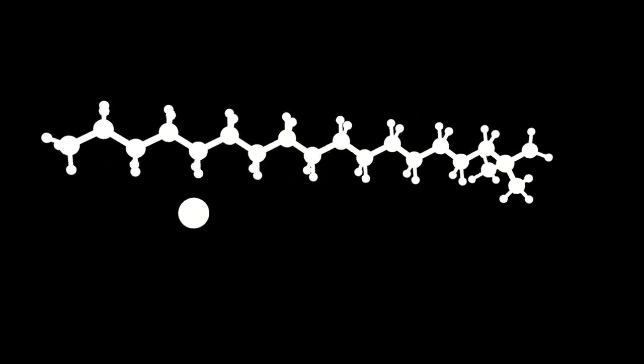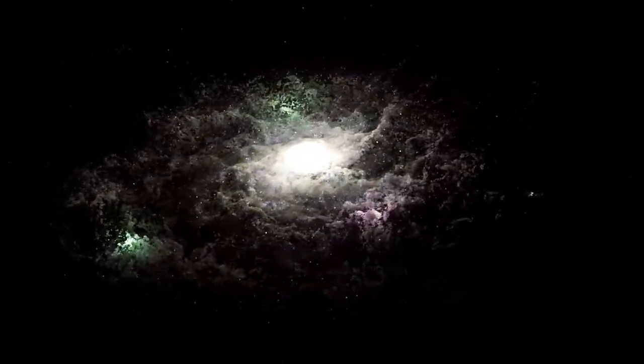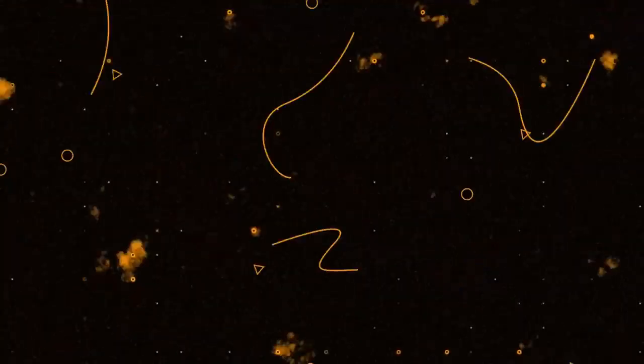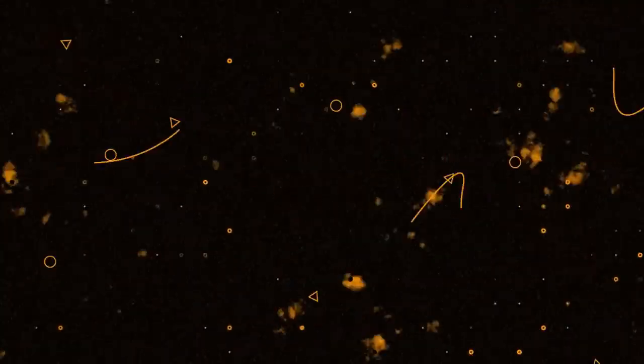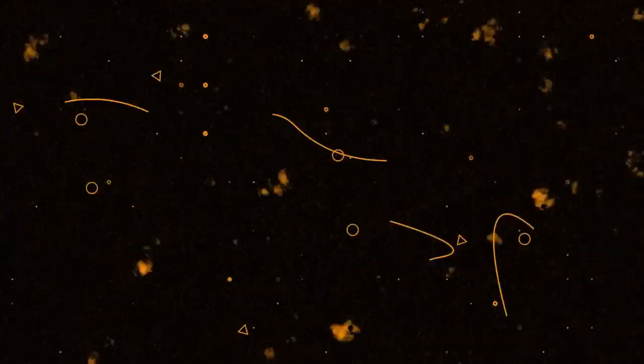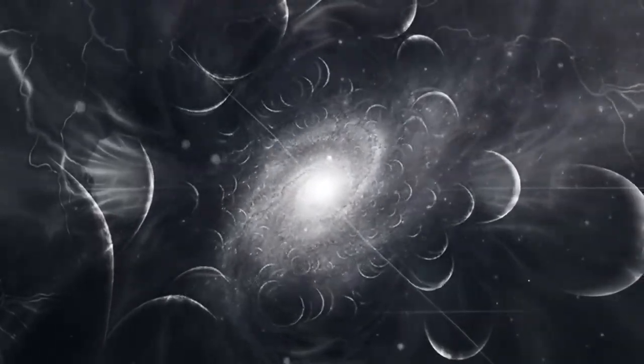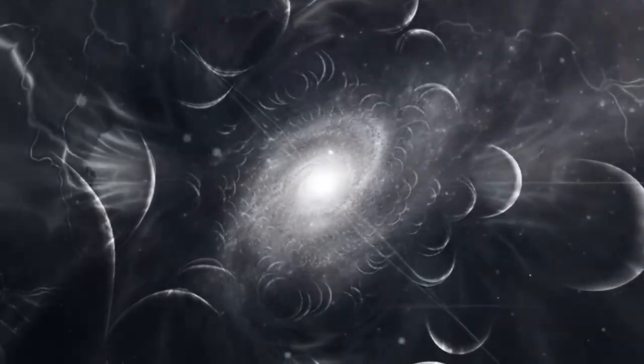Another game-changing revelation came not from what black holes emit, but from what may invisibly surround them. In a pioneering study by the Education University of Hong Kong, astronomers discovered the first indirect evidence that black holes might be cloaked in dark matter, the elusive substance thought to make up roughly 85% of the universe's total mass. By monitoring binary star systems orbiting black holes,